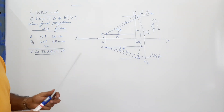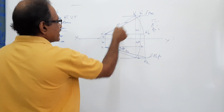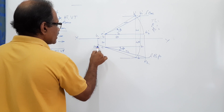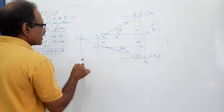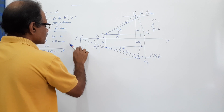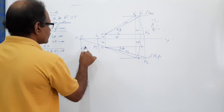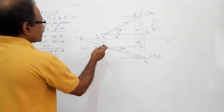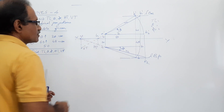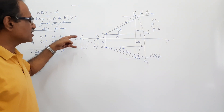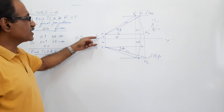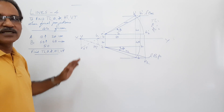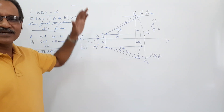Now you have to find the traces. What is the method to find the traces? Extend the elevation - which is a-dash b-dash - if necessary. What do you get? You get H. Drop a vertical through H and extend the plan AB to get HT. Extend the plan further past XY, drop a vertical through V, and extend the elevation to locate VT. You have now located the traces.